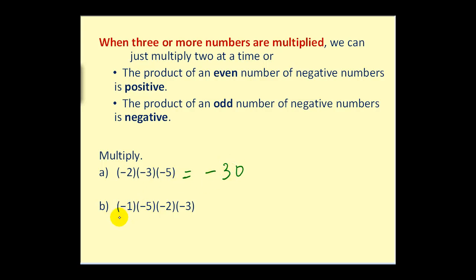On part B, we have 4 negative numbers being multiplied together — an even number of negative numbers — therefore our product will be positive. We multiply the absolute values: 1 times 5 is 5, times 2 is 10, times 3 is 30. Our product is positive 30.